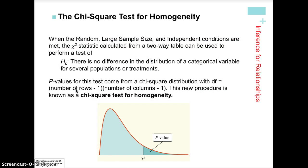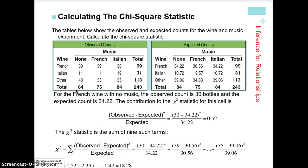Degrees of freedom is what we need next. We have three types of music and three types of wine. Degrees of freedom = (number of columns − 1) × (number of rows − 1) = (3 − 1) × (3 − 1) = 2 × 2 = 4 degrees of freedom for this problem. We never count the totals row or column in those numbers.